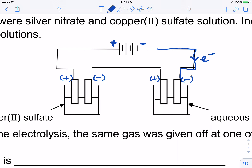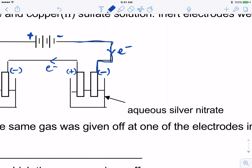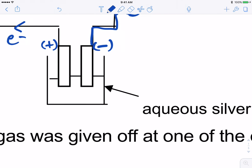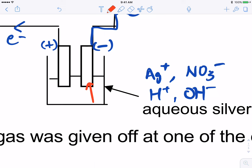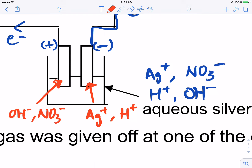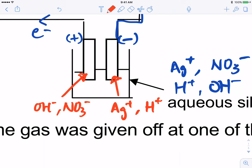Following the circuit, this will be your negative electrode and correspondingly this must be positive, then this must be negative and this must be positive. The flow of electrons goes from the positive terminal, which supplies electrons, and your negative terminal receives the electrons. For silver nitrate, let's decide what species are present. We have silver ions, nitrate ions, and we must also consider H+ and OH−. The positive cations will move towards the negative electrode, so at the negative electrode you have Ag+ and H+ to choose from.